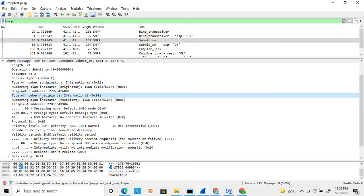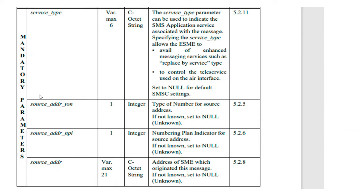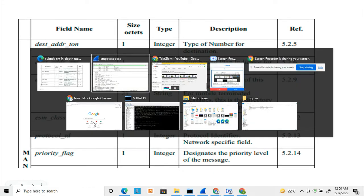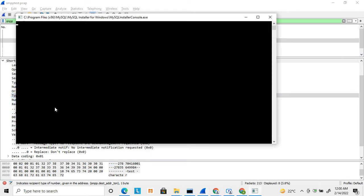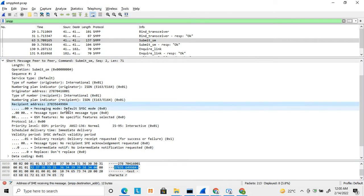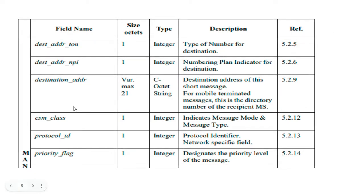Next, for the destination number, the same structure applies: the first byte is the destination type of number (TON), the second byte is the destination numbering plan indicator (NPI), and then comes the destination address — the actual destination phone number where you want to send the SMS.